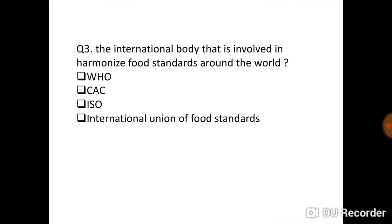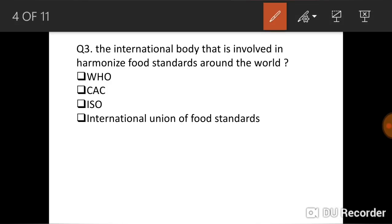The next question is: The international body that is involved in harmonized food standards around the world. So the food standards is controlled by which body? The food standards are controlled by CAC, meant Codex Alimentarius Commission. So CAC controls the food standards around the world.